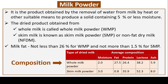Milk powder is a product obtained by the removal of water from milk by heat or other suitable means to produce a solid containing 5% or less moisture. The dry product from whole milk is called whole milk powder (WMP); from skim milk it is called skim milk powder (SMP) or non-fat dry milk (NFDM). Milk fat: not less than 26% for WMP and not more than 1.5% for SMP.